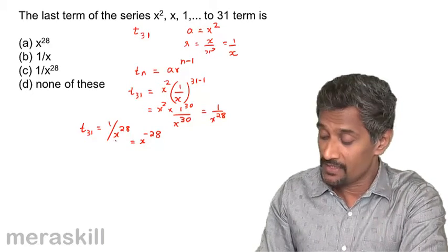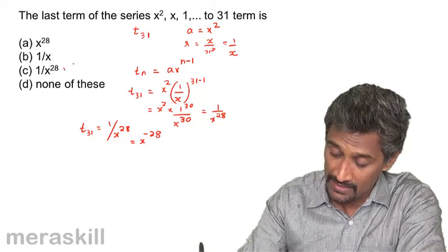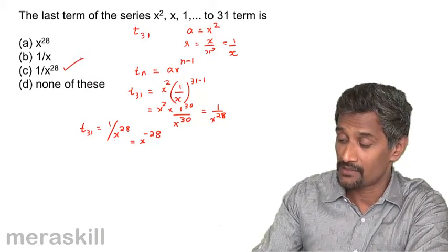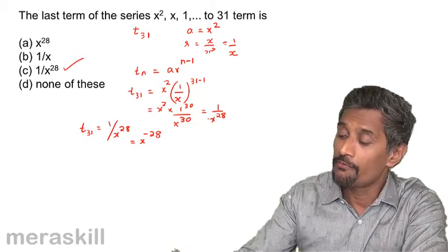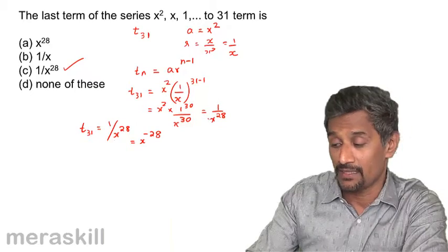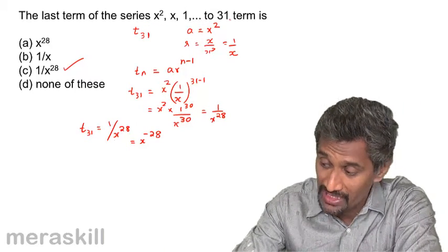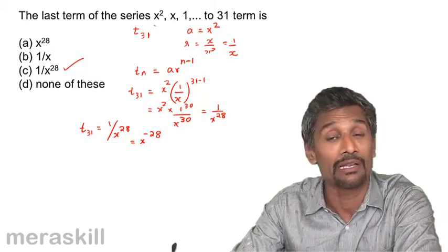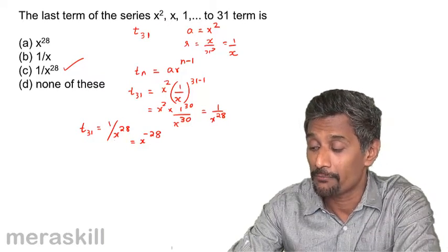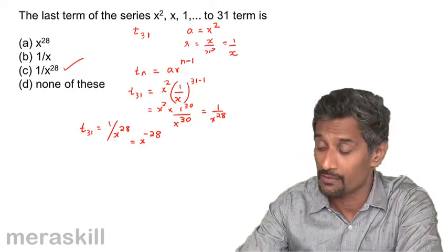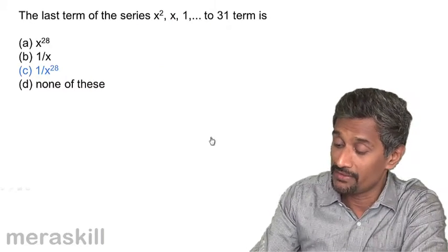So the 31st term is 1/x²⁸, which can also be written as x^(−28). The final answer is either form. This is a simple application of finding the nth term. Just as in arithmetic progression, the GP gives us a and we also find the value of r from the given series.